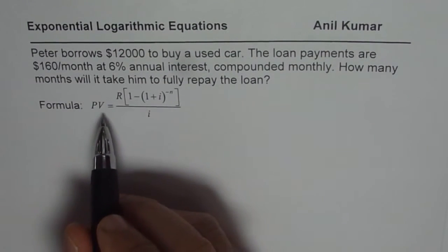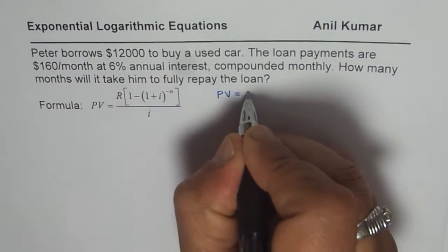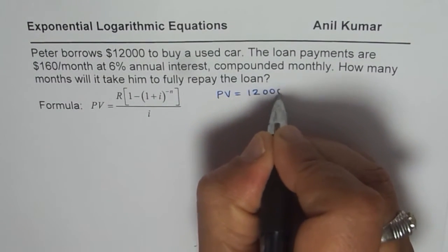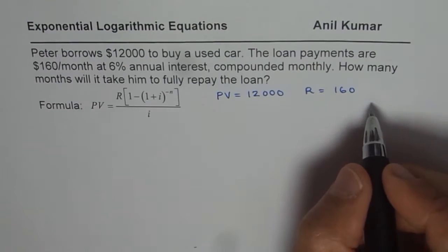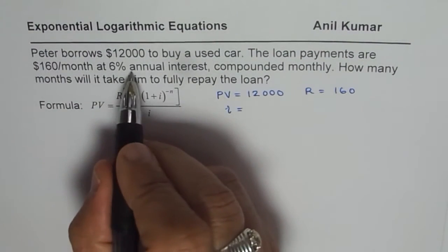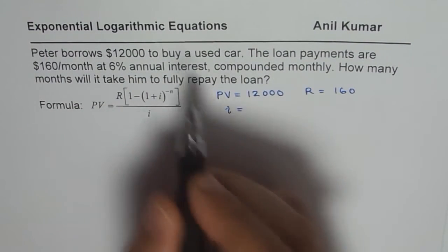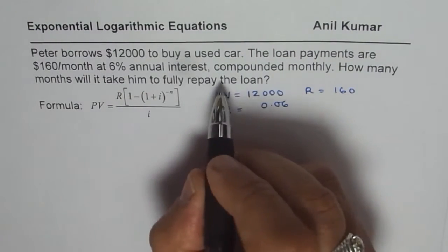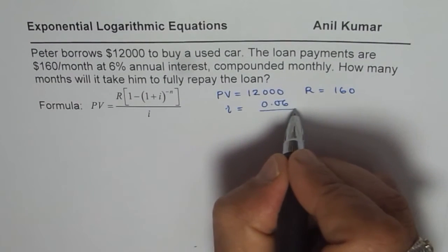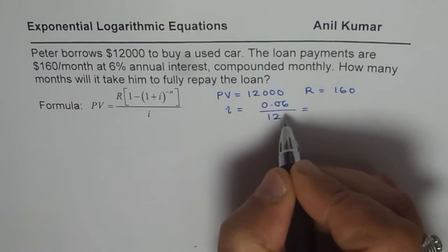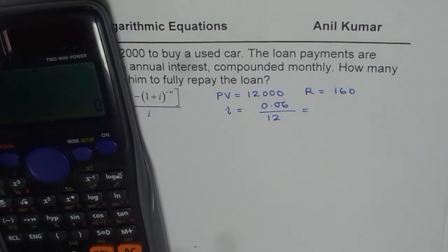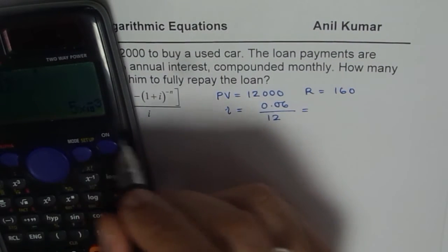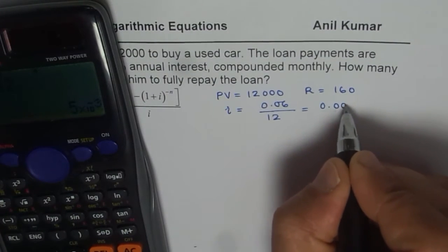The present value of the car is given to us, so we know present value is $12,000. We know R, the monthly payments, is equal to $160 per month. The interest I is 6% per annum, which is 0.06. Since it is being compounded monthly, we have to divide that by 12. So 0.06 divided by 12 equals 0.005.